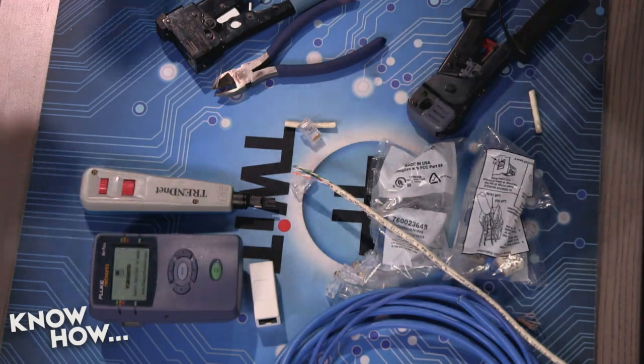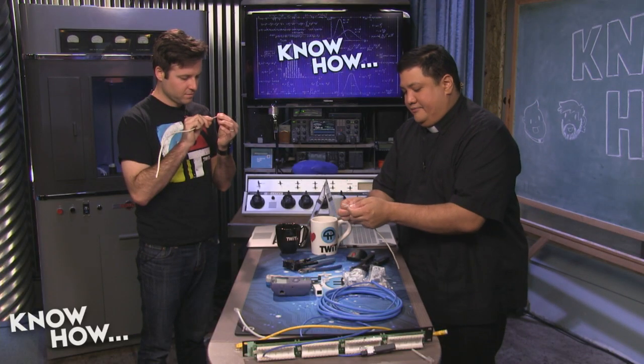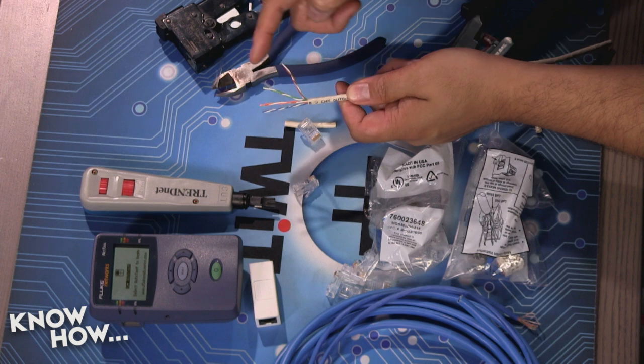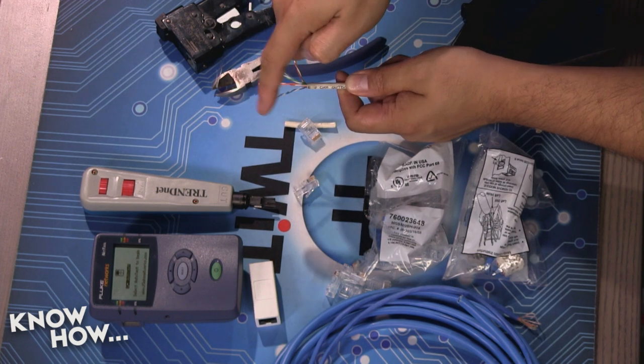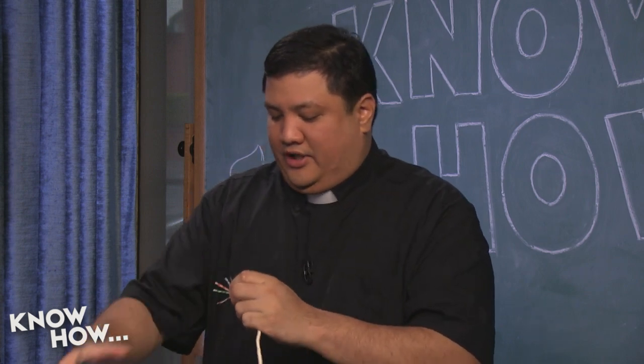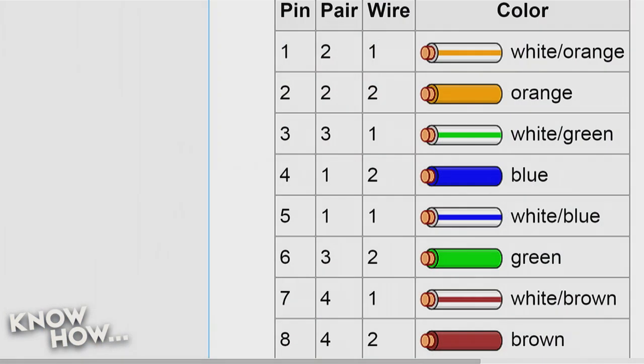Inside the cable you've got four colors: brown, green, orange, and blue. These colors are absolutely necessary — both ends of the cable need to match up in the right order so you don't have cross-connects. The T568B standard states the order is: white/orange, orange, white/green, blue, white/blue, green, white/brown, brown. You can find this on Wikipedia by searching T568B.